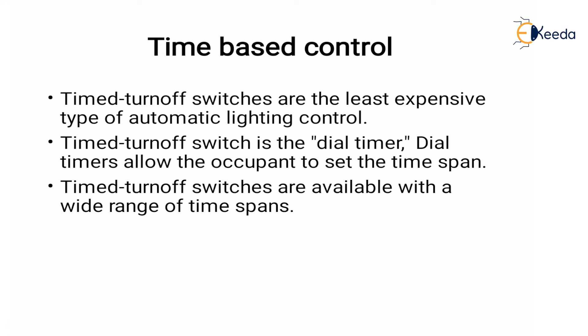Next is time-based control. Time turn-off switches are the least expensive type of automatic light control. A dial timer allows the occupant to set the time span — it is a spring-wound mechanical timer set by twisting the knob to a desired time. Some spring-wound units make an annoying ticking sound as they operate, but the newer type of time turn-off switches are completely electronic and silent. These switches are available in a wide range of time spans.